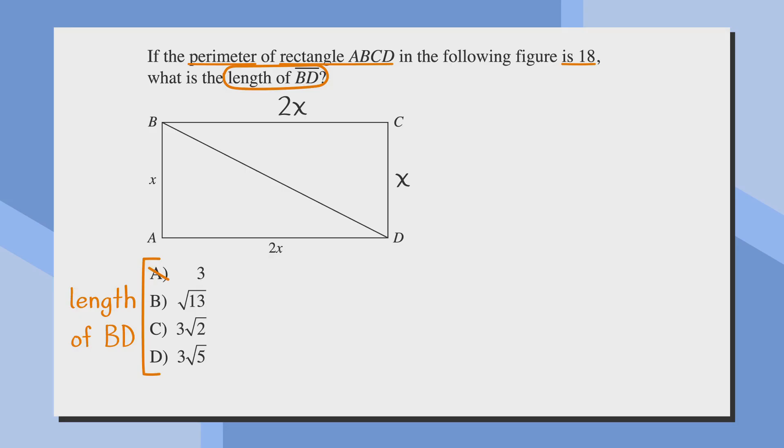Look at that, answer choice A! That would be great, except the question isn't asking us to solve for x, it's asking us for the length of BD, and BD is clearly longer than x. Always make sure you're answering the question, not just doing the math. Since we know x = 3, let's plug that into the picture, which gives us sides of 3 and 6.